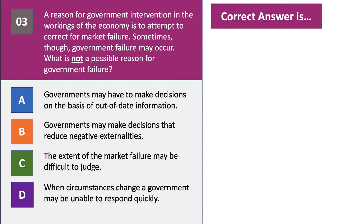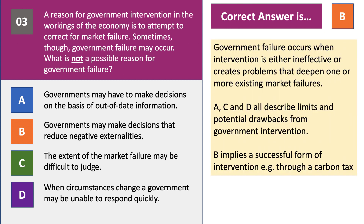The answer is B. Government failure occurs when an intervention, often done with the best of intentions, either is ineffective, doesn't work, or creates second and third round problems that can deepen the existing market failures. Options A, C, and D do describe the potential drawbacks or limitations of government intervention, so they are possible government failures. B, though, implies a successful form of intervention — for example, using a carbon tax or some other pollution tax to reduce a negative externality. There's no hint of government failure in option B.